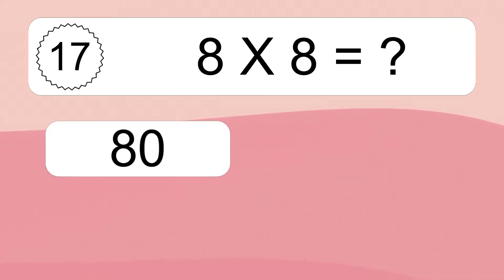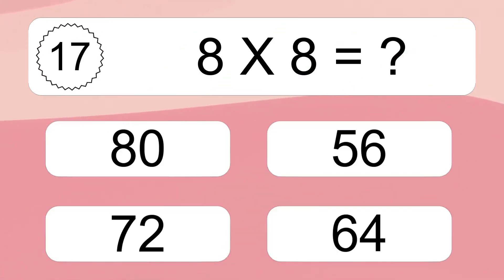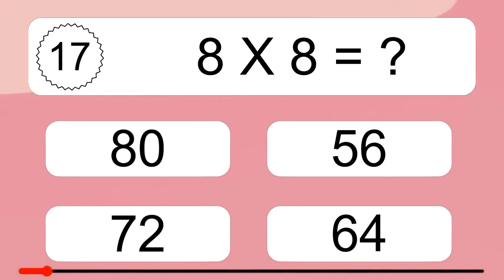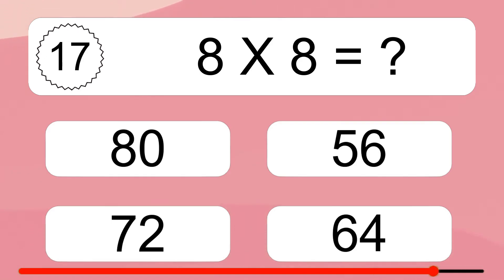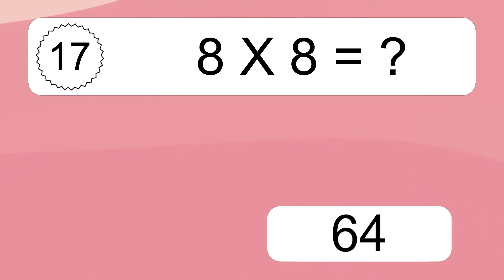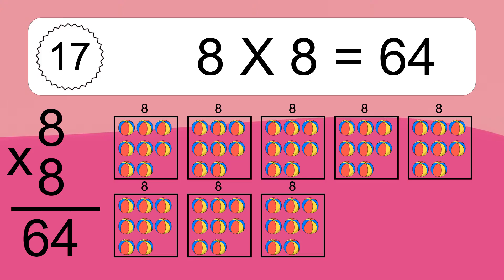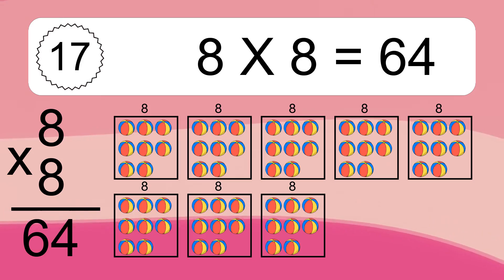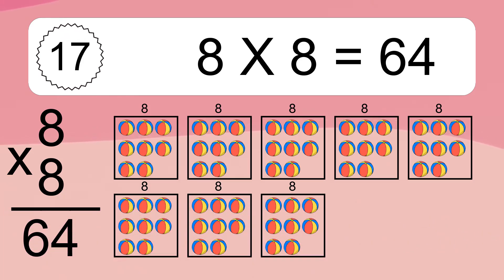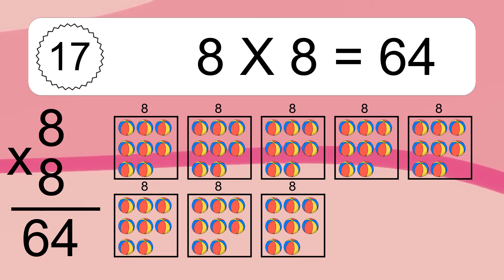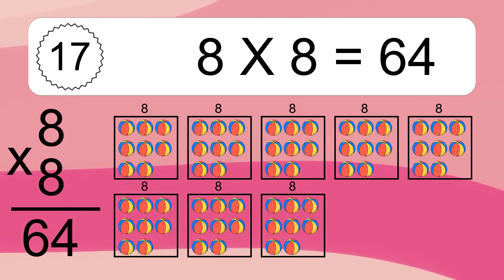8 times 8 equals what? 8 times 8 equals 64. We have 8 boxes, and each box has 8 colorful balls inside. If you count all the balls in all the boxes together, you will have 8 times 8 balls. This equals 64 balls.